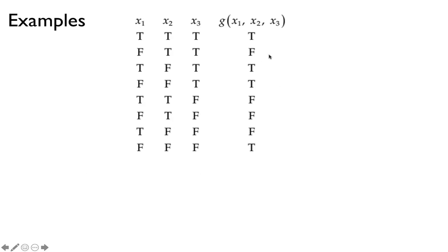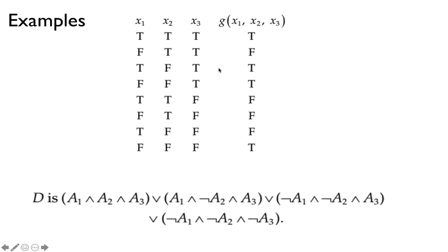Here's another example with three variables. Again, we look only at rows that have true and convert them. For example, if a row is true, true, true — we just keep them the same: a1 AND a2 AND a3. The next true row has true, false, true — so keep the first, negate the second, keep the last. Another row: false, false, true means not a1 AND not a2 AND a3. These four parts make those four rows have true values, and anything else gives false. That's how you generate any truth function using only AND, OR, and NOT.